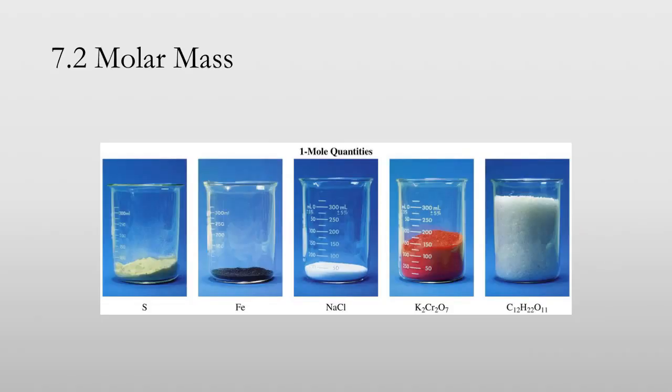These are one mole quantities, and so one mole of sulfur takes up that much space. One mole of iron takes up that much space. A mole of sodium chloride, that. A mole of potassium dichromate is going to be that big. A mole of sucrose is going to be that big. Why are they different sizes? It's because they have different numbers of atoms, and the atoms themselves are going to be different sizes. So you can't necessarily connect one mole of hydrogen is the same size as a mole of carbon, which is the same size as a mole of sodium chloride. It's just different for each.